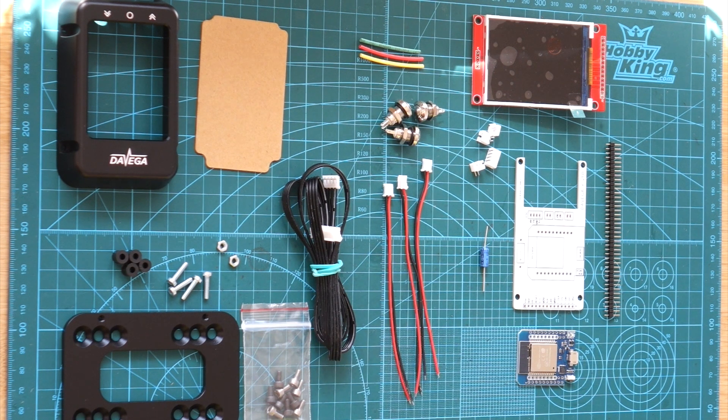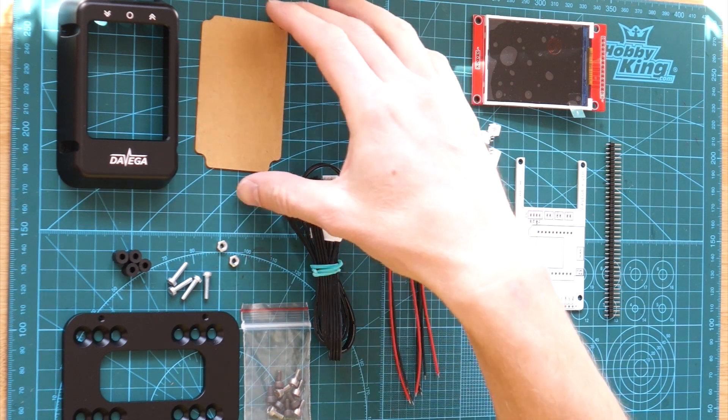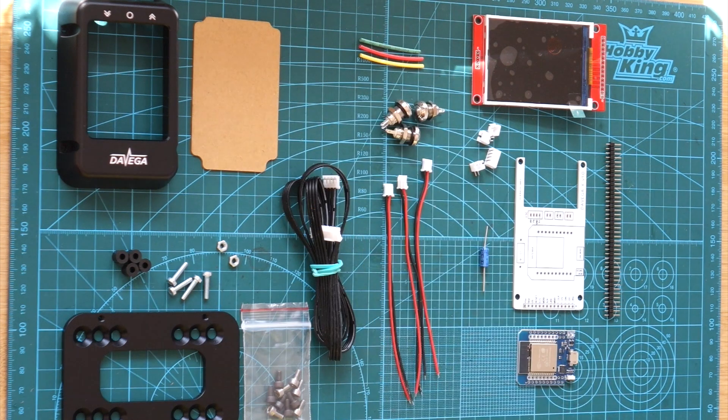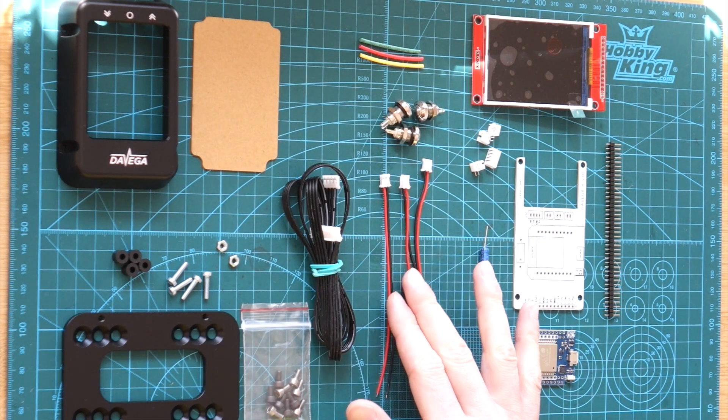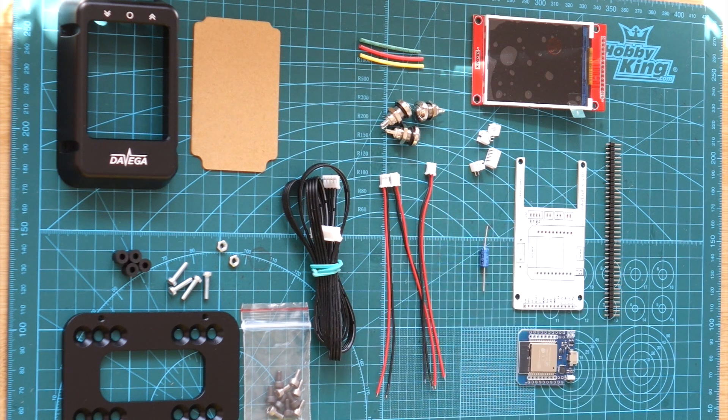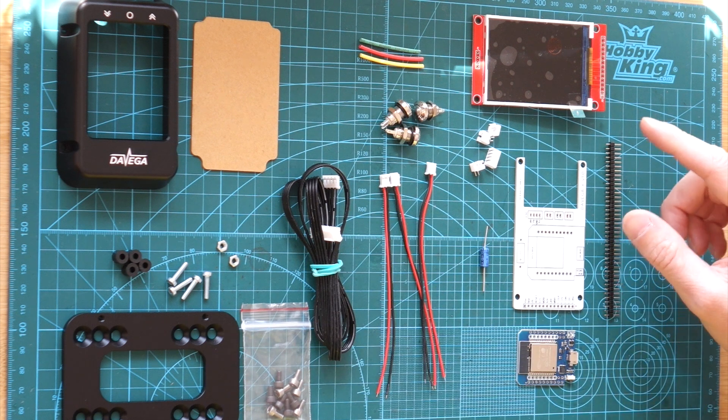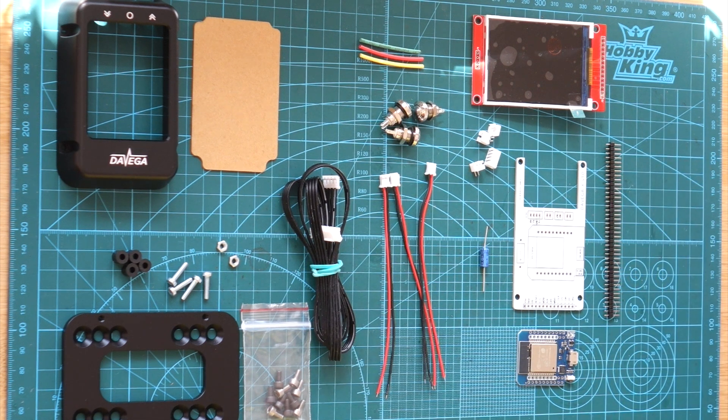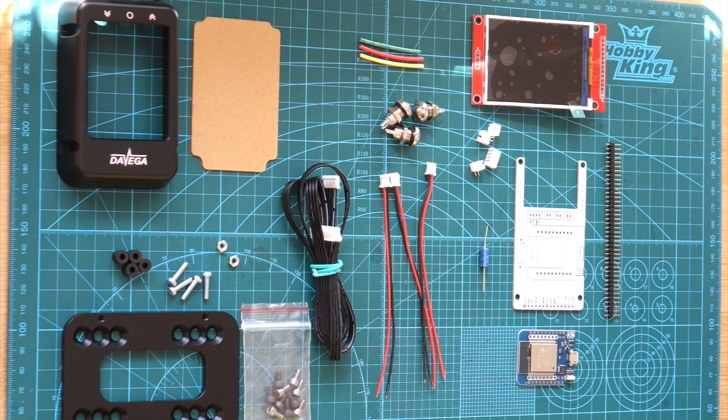The assembly consists of three main steps. First we'll install the protective glass into the housing. Next we'll solder these wires and connectors to the push buttons. And then we'll assemble the DEVEGA PCB. And at the end we put it all together.